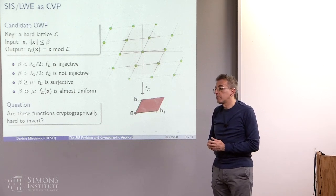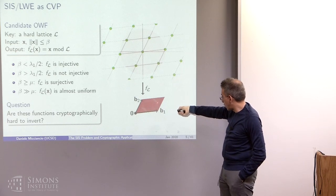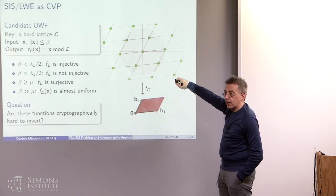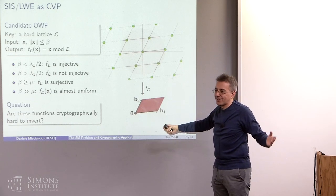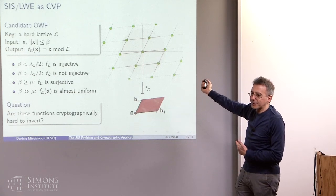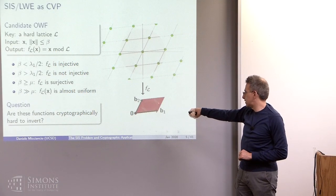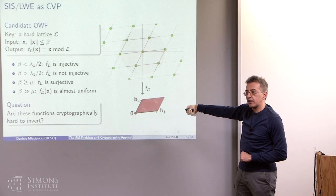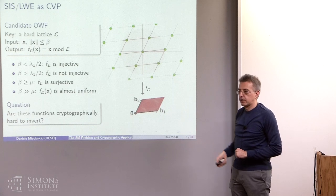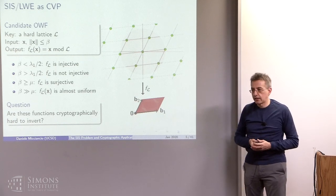Inverting means finding a short pre-image — finding a point that is congruent to the target but is short. The picture is a bit misleading in the sense that the vectors here look shorter, but that's just because in two dimensions, if you want the picture to be readable, there's not much you can do. It is considering all the shifted copies of the lattice centered around the target, and of all these points, finding the closest to the origin — which typically is not the one inside the parallelepiped. This puts things in the sort of geometric context of general lattices described yesterday.